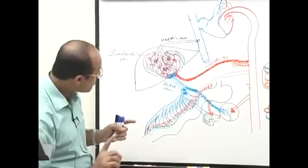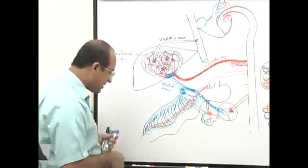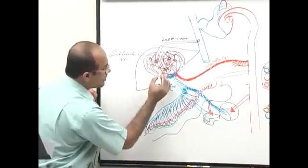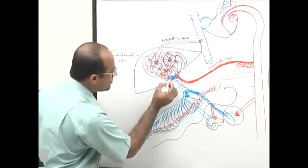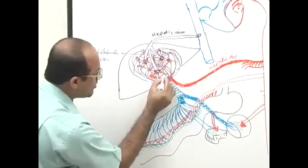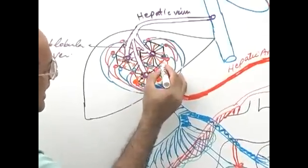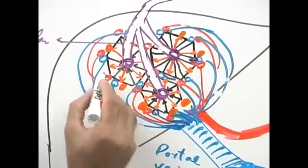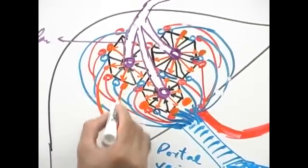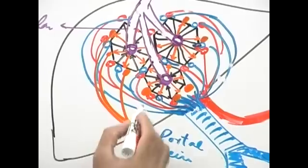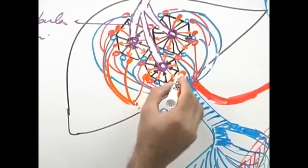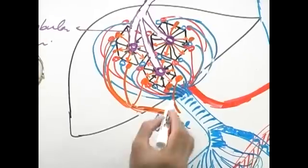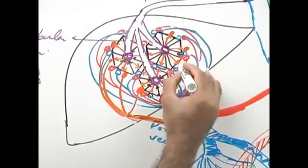At the same time, the bile system is draining to the periphery. At every corner there is a bile duct, and these bile ducts from every corner come together.